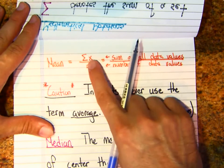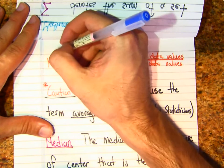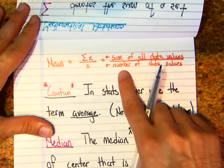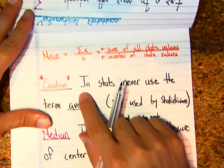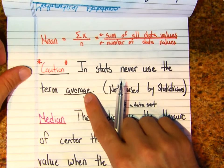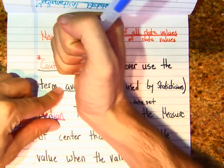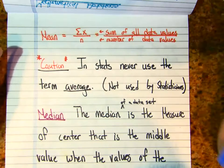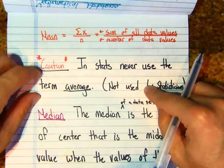The mean formula is sigma x over n — that's the sample mean: sum of all data values divided by the number of data values. Caution: in statistics we never use the word 'average.' From now on we're not allowed to use that word. People in stats just say 'mean.'